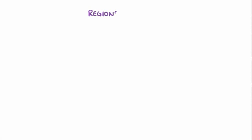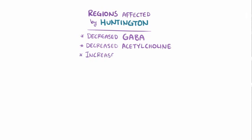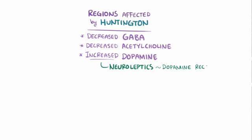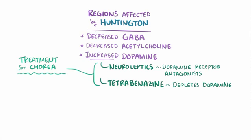The brain regions affected by Huntington disease have decreased GABA and acetylcholine, and increased dopamine levels. This increased dopamine helps explain why neuroleptics — which are dopamine receptor antagonists — and tetrabenazine, which depletes dopamine, are used to treat chorea in people with Huntington disease.